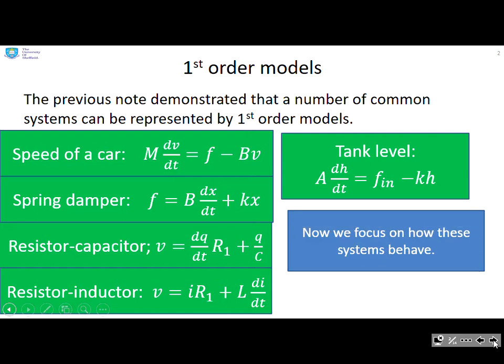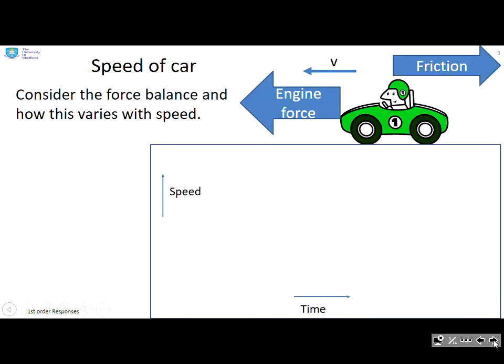Next we're going to focus on how these systems behave. Let's look at the speed of a car then. Now when you do a force balance, you find out you get a model like this: M dv/dt plus Bv equals f. And the key thing we want you to look at here is this plus sign. The force is distributed between the acceleration term M dv/dt and the friction term Bv.